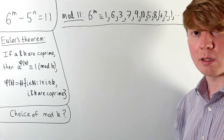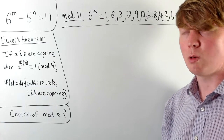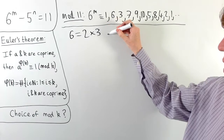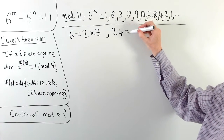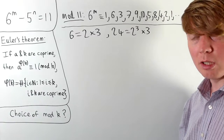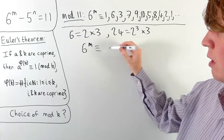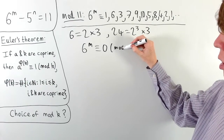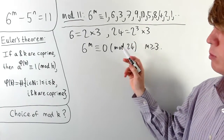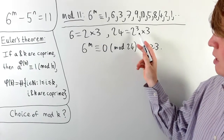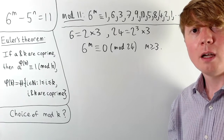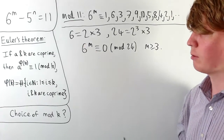With 24, things were particularly nice because 6 to the power of m was always equivalent to 0 mod 24 for large enough m. One way to guarantee this is to look at the prime factorisation of 6, which is 2 to the 1 times 3 to the 1. The number 24 has exactly the same prime factors — 2 cubed times 3 to the 1 — just more 2s. This guarantees that 6 to the m is always a multiple of 24, hence equivalent to 0 modulo 24, as long as m is at least 3.